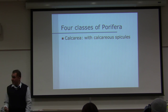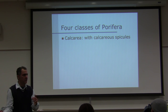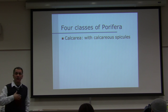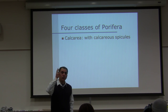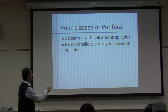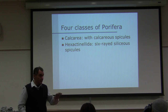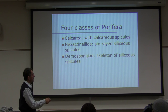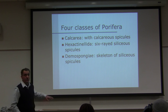Spicules are made up of calcium carbonate and silicon, or spongin. Spongin is made up of collagen — like a bath sponge. A natural bath sponge does not have calcium carbonate or silicon; it has spongin, which is a collagen protein molecule. There are four classes of sponges, but we only have specimens for three of them.